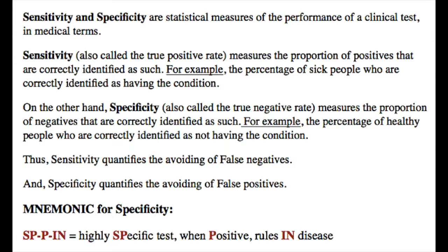Sensitivity and specificity are statistical measures of the performance of a clinical test. In medical terms, sensitivity, also called the true positive rate, measures the proportion of positives that are correctly identified as such. For example, the percentage of sick people who are correctly identified as having the condition.